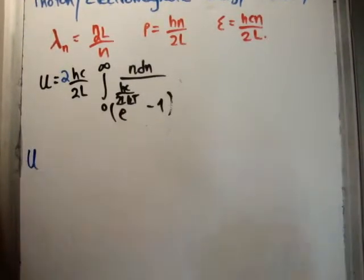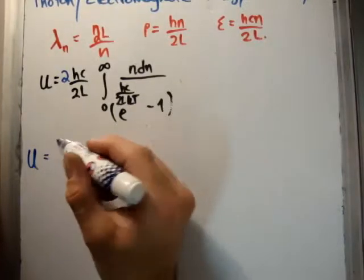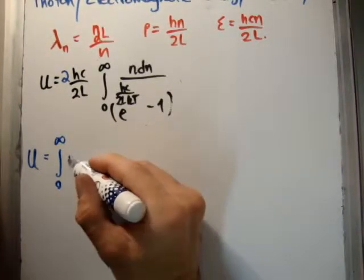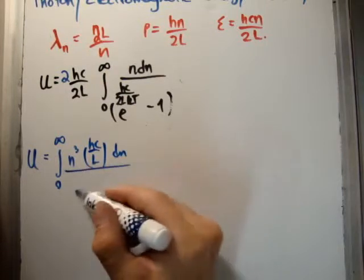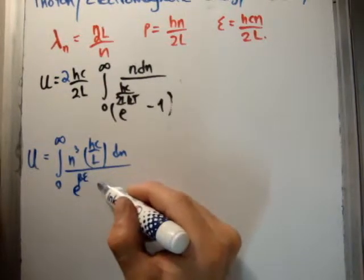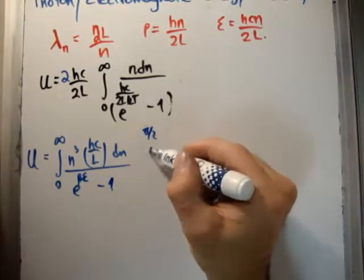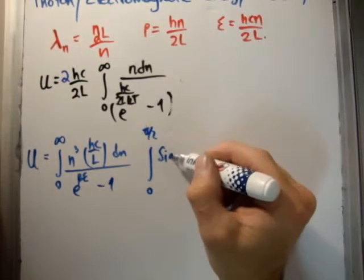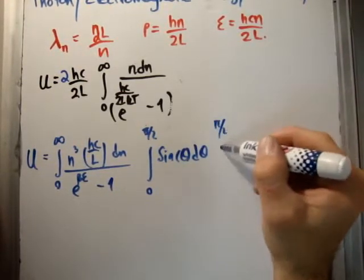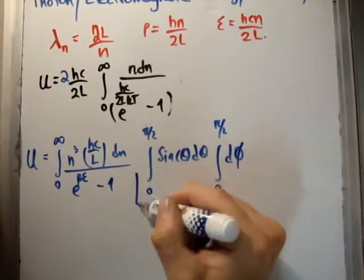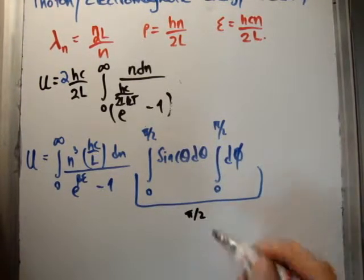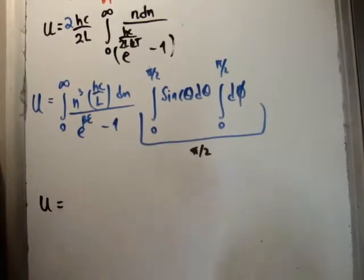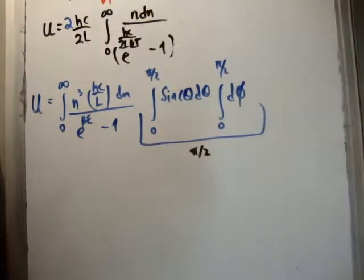Moving to spherical coordinates, we're going to have the integral containing N³ hc over L dN over e to the beta epsilon minus 1, times the integral from 0 to π/2 of sin θ dθ, and the integral from 0 to π/2 of dφ. The integral of sin θ is negative cosine θ, so those angular integrals give a result of π/2.